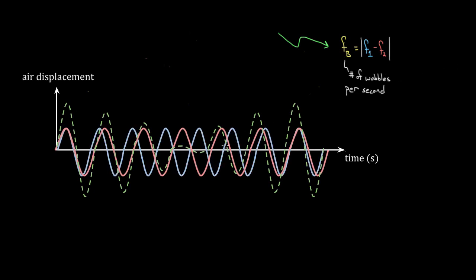When you do this, you get beats. This is a sound wave that goes from being loud, i.e. constructive, to destructive, soft, and then all the way back to loud, constructive again. The number of times it does that per second is the beat frequency — the number of those wobbles per second. The way you find that beat frequency is you just take the difference in the two individual frequencies of the two sound waves that are overlapping.